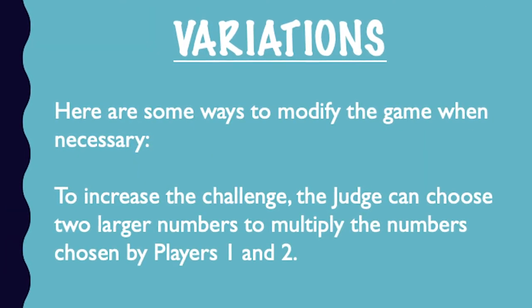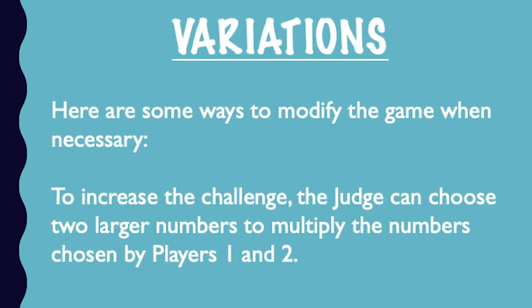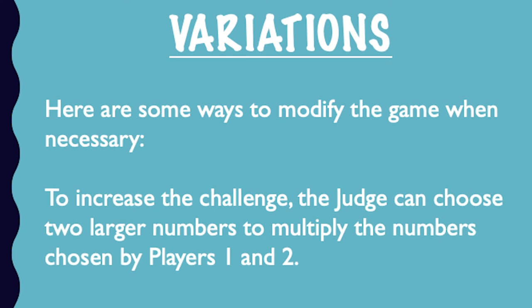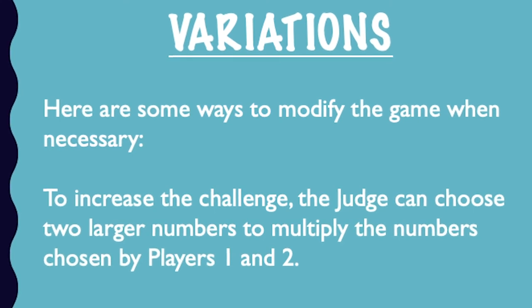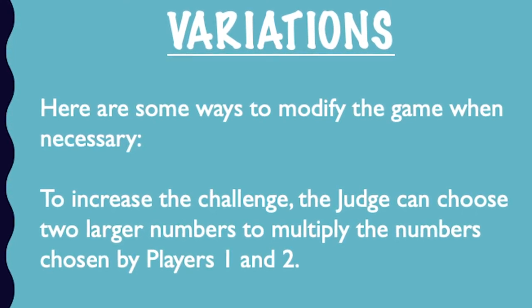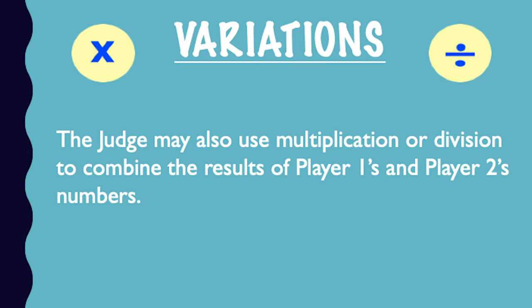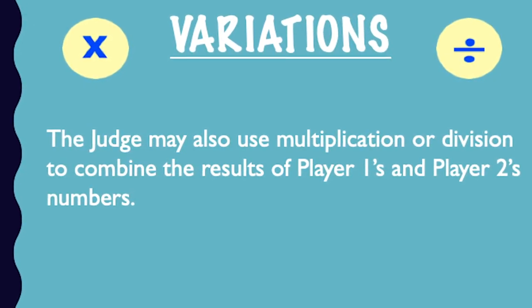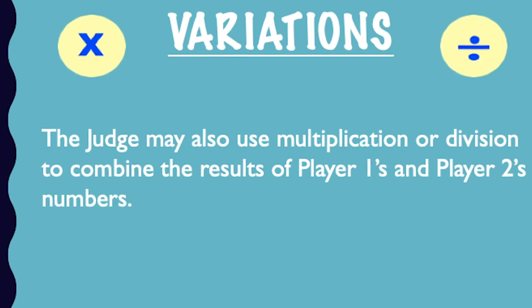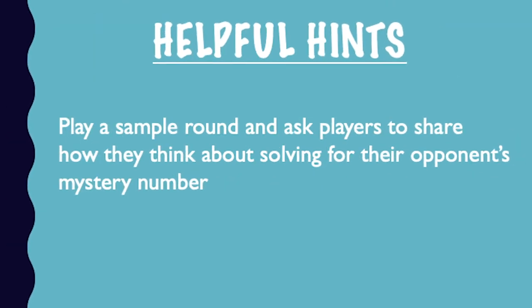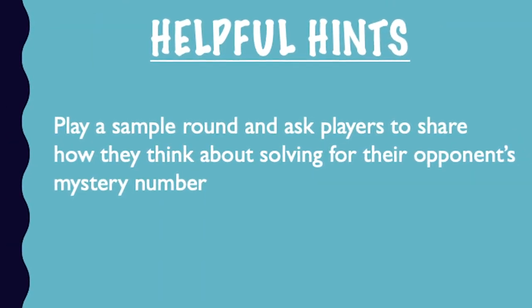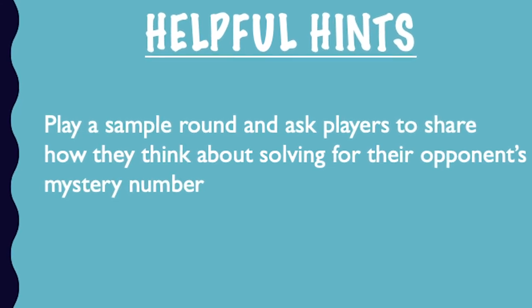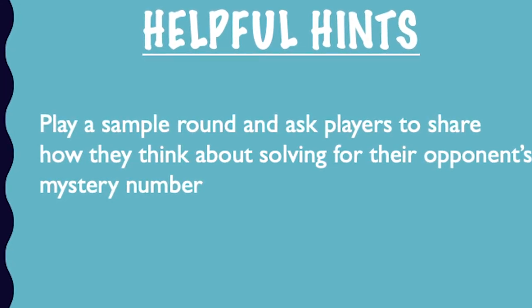Here are some ways to modify the game. To increase the challenge, the judge can choose two larger numbers to multiply the numbers chosen by players one and two. The judge may also use multiplication or division to combine the results of player one's and player two's numbers. If players have trouble solving equations, play a sample round and ask players to share how they think about solving for their opponent's mystery number.